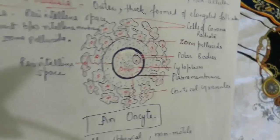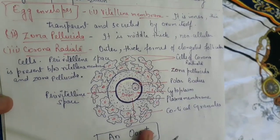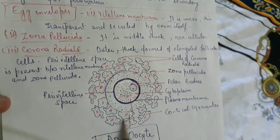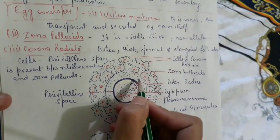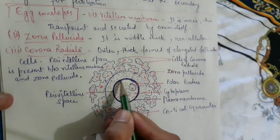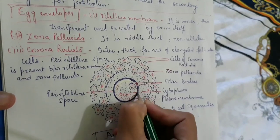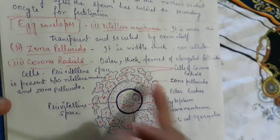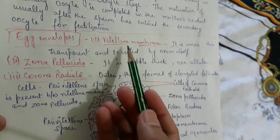Next we are going to discuss the structure of ovum or egg. A diagram of the egg has been drawn. We will discuss each part. First, let us look at the envelopes of the egg — there are three layers surrounding it: vitelline membrane, zona pellucida, and corona radiata. Looking at the diagram, the outermost cells visible are the cells of corona radiata, the second covering is zona pellucida, and the innermost is the vitelline membrane.